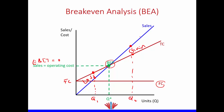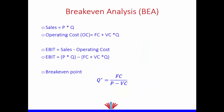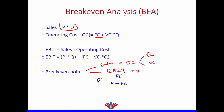That's why the minimum quantity we will accept to produce is the quantity at the break-even point. The formula for break-even point: we said sales equals operating cost, which includes fixed cost and variable cost, and EBIT equals zero. Sales is price times quantity, and operating cost is fixed cost plus variable cost per unit multiplied by quantity. Rearranging, our break-even quantity Q* equals fixed cost divided by (price minus variable cost per unit).